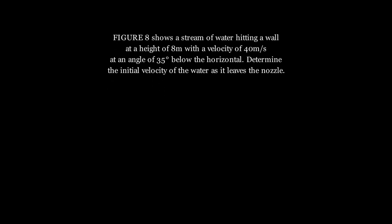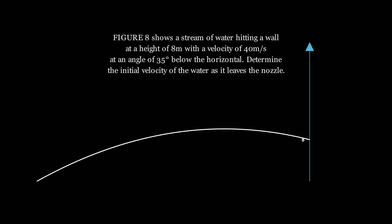Using the concepts we have learned, we can now solve question 14B. Figure 8 shows a stream of water hitting a wall at a height of 8 meters with a velocity of 14 meters per second at an angle of 35 degrees below the horizontal. Our job is to find the initial velocity of the water. Here is how figure 8 looks.